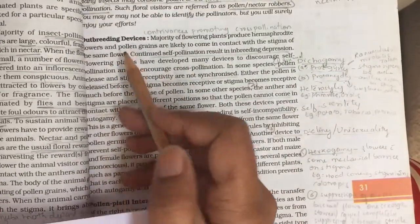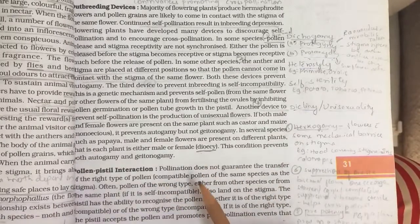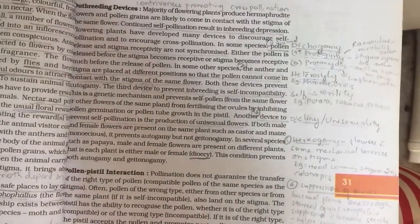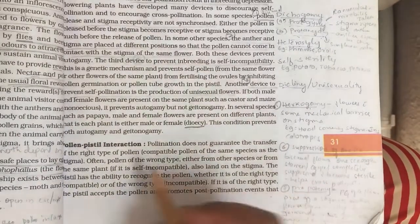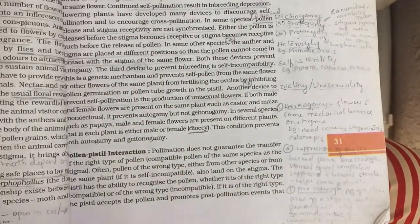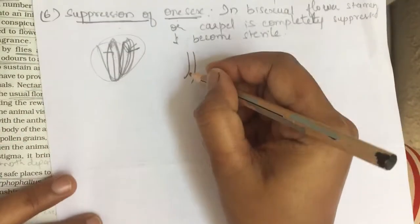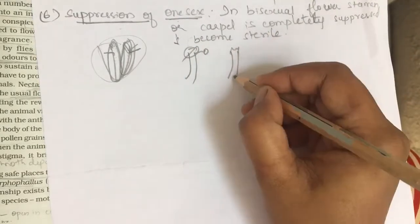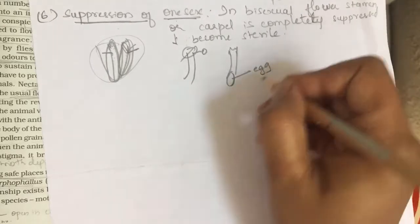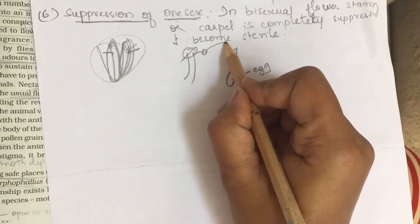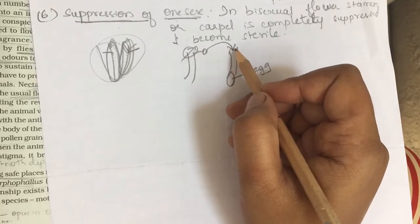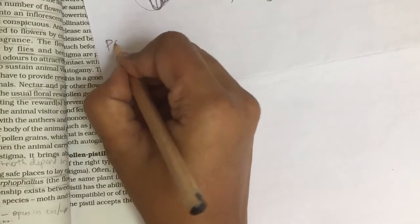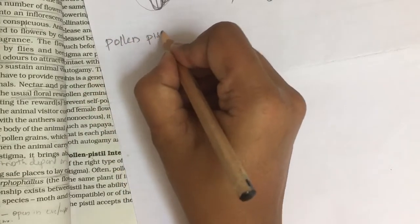In the previous video we discussed about outbreeding devices. Today we shall discuss about pollen-pistil interaction. Till now what we have discussed: the male reproductive organ produces pollen grains, and the female reproductive organ produces the embryo sac, in which there is a presence of an egg. We discussed how pollen grains are transferred to the stigma through pollination, and then we discussed outbreeding devices which help for cross-pollination. Now we are talking about pollen-pistil interaction.